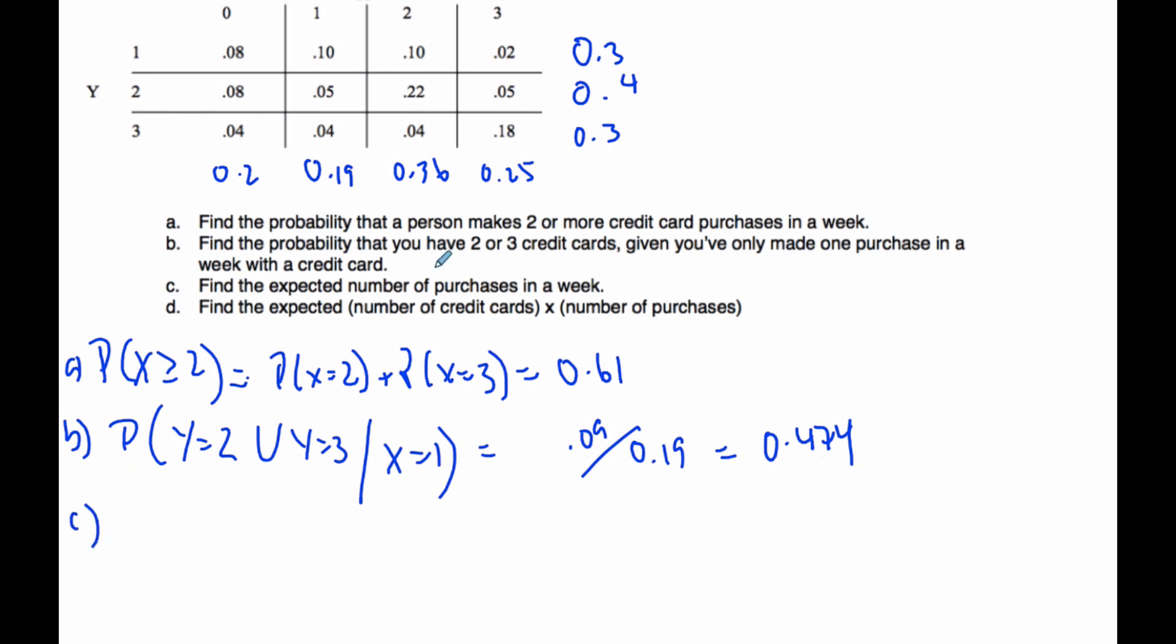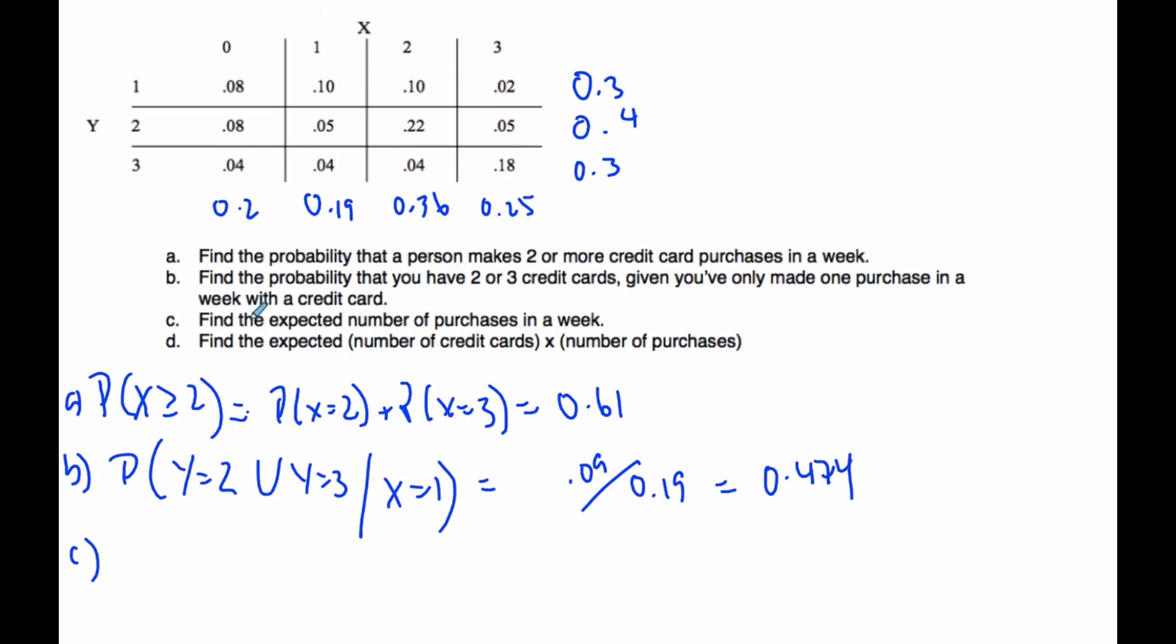Part C says the expected number of purchases in a week. The purchase in a week is talking about X, so it's asking for the expected value of X. Because we're only doing a single variable here, it's 0 times 0.2 plus 1 times 0.19 plus 2 times 0.36 plus 3 times 0.25. When I do that, I get 1.66 purchases in a week as my expected number.